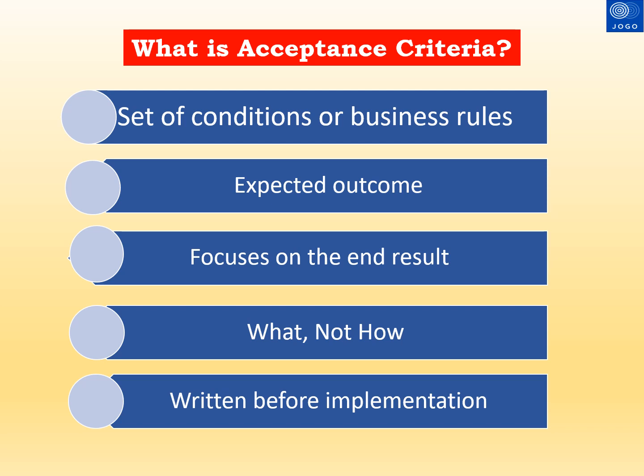Acceptance criteria clarifies the expected outcome of the user story in a concrete manner. It focuses on the end result — what is needed for the customer — and is not related to how the solution should be implemented. Acceptance criteria should be written before the implementation and can be created jointly by the development team and the product owner.